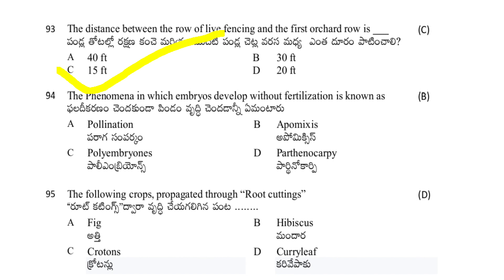The phenomenon in which embryos develop without fertilization is known as: pollination, apomixis, polyembryony, or parthenocarpy. The answer is B — apomixis, in which embryos develop without fertilization.